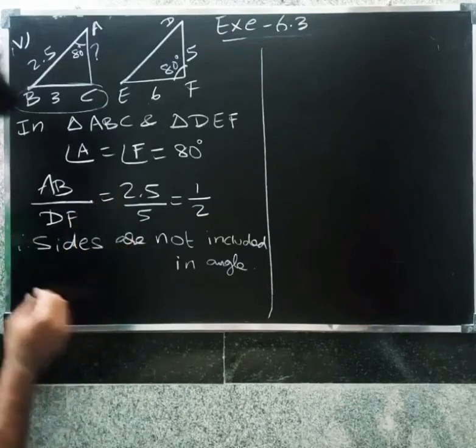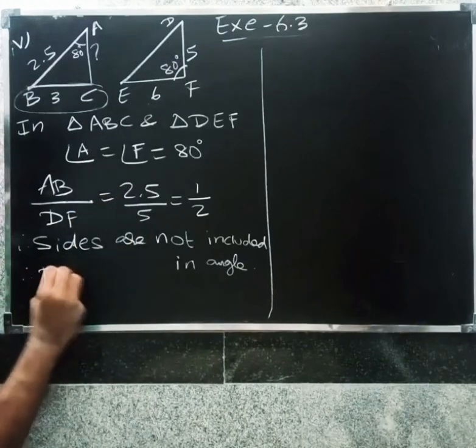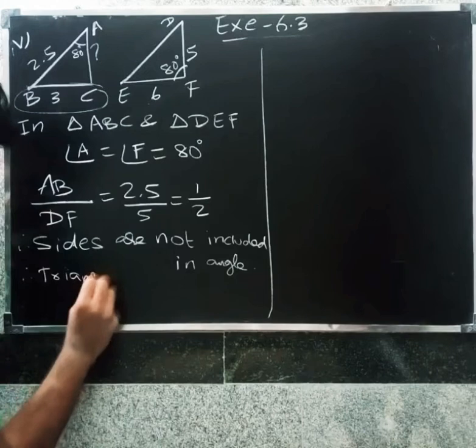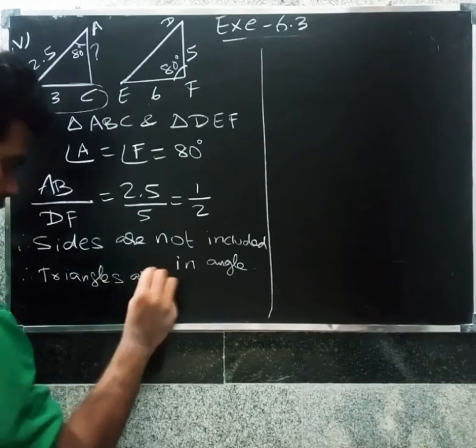Therefore, triangles ABC and DEF are not similar.